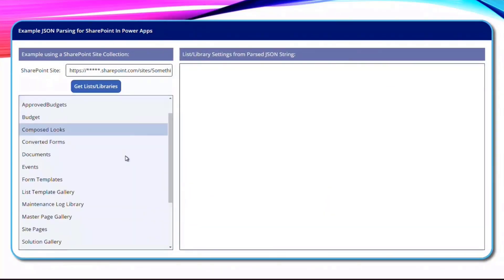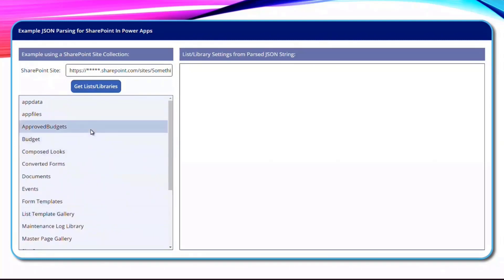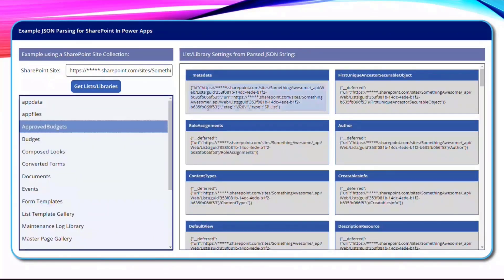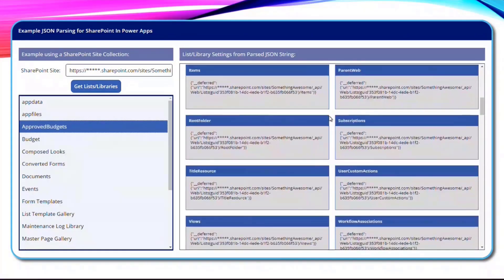Doing that same thing, I then get a list of all of those lists and libraries from SharePoint. I can click on one of those lists, and I get all of the key value pairs, all of the data or the properties from that list library.